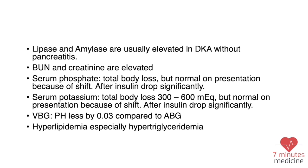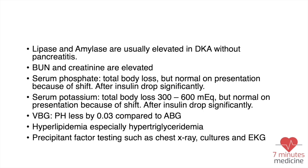VBG pH is lower by 0.03 compared to ABG, but we use it because oxygen status is not the primary concern — it is easier for patients and sufficient for monitoring pH with correction. Hyperlipidemia, especially hypertriglyceridemia, may be found on blood work. Do not miss screening for precipitating factors like infection and cardiovascular events: order chest X-ray, cultures, and ECG.